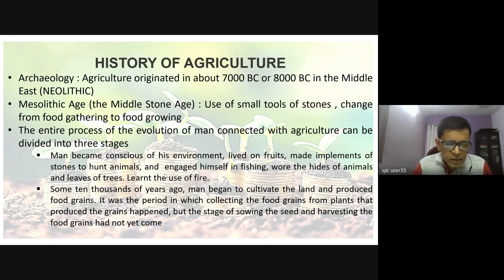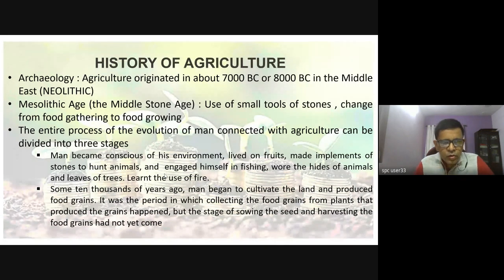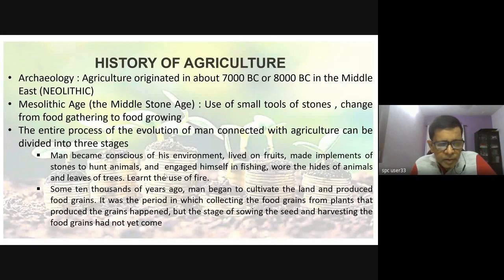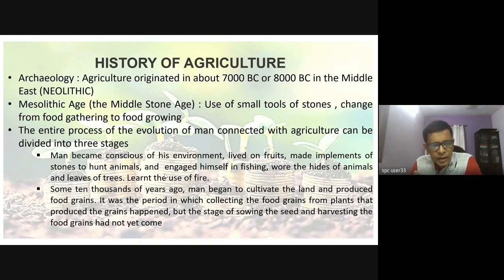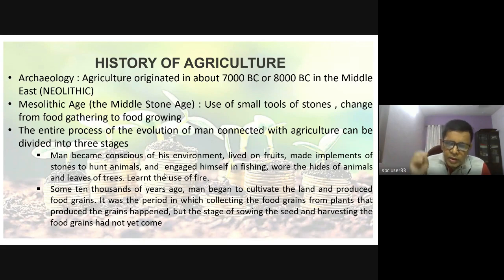The second stage — some 10,000 years ago, again at the close of the Neolithic period — man began to cultivate the land and produce food grains. It is this period in which collecting of food grains from plants happened, but the stage of sowing seeds and harvesting was not yet prominent.